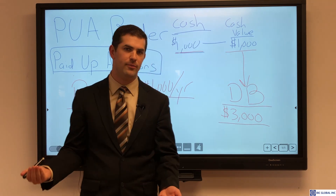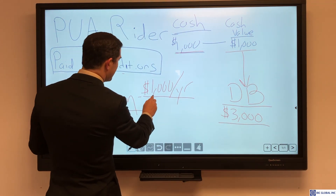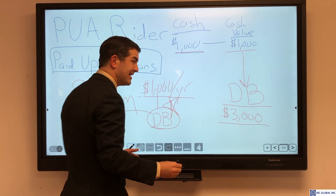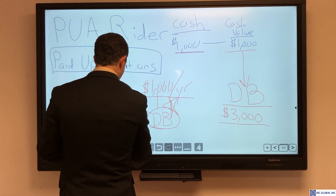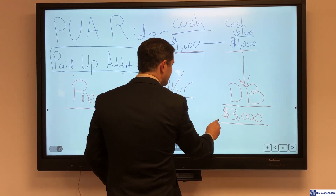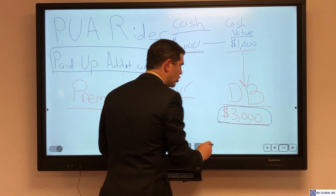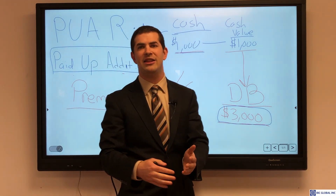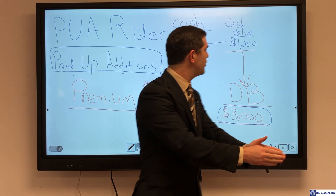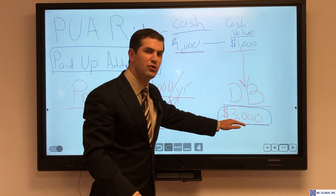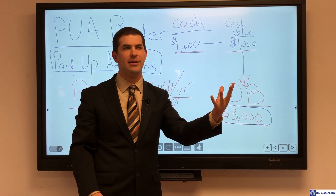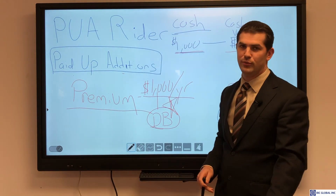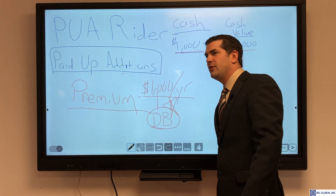The paid up additions rider — our cash dumping — is much more flexible. It is not billed, though we can set it up to be billed and adjust it up and down. Premium dollars always buy us death benefit and eventually build cash, but they're meant to first satisfy the life insurance aspect. The paid up additions feature goes into cash and does buy some life insurance, but it's called paid up because those cash contributions are optional. If I give the company that extra thousand dollars, the resulting three thousand dollars of life insurance is paid up — meaning there's no recurring premium billed for it each year.